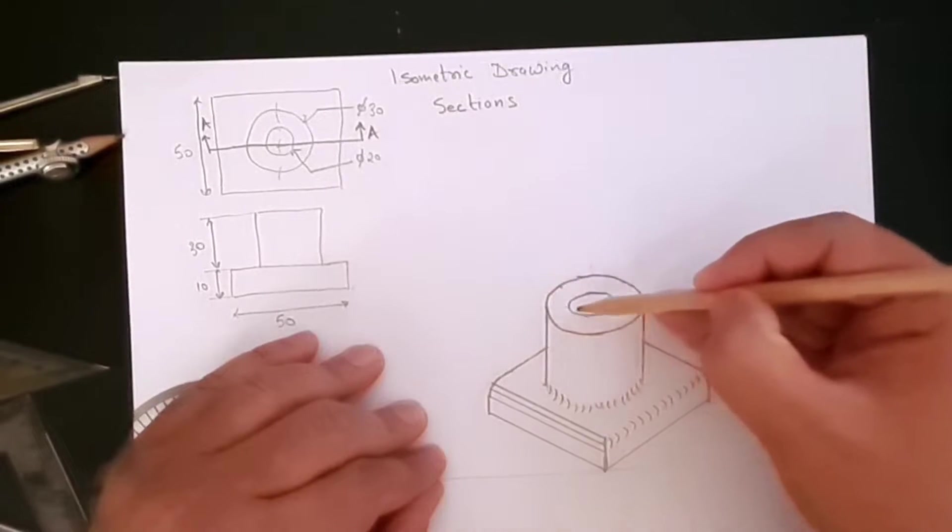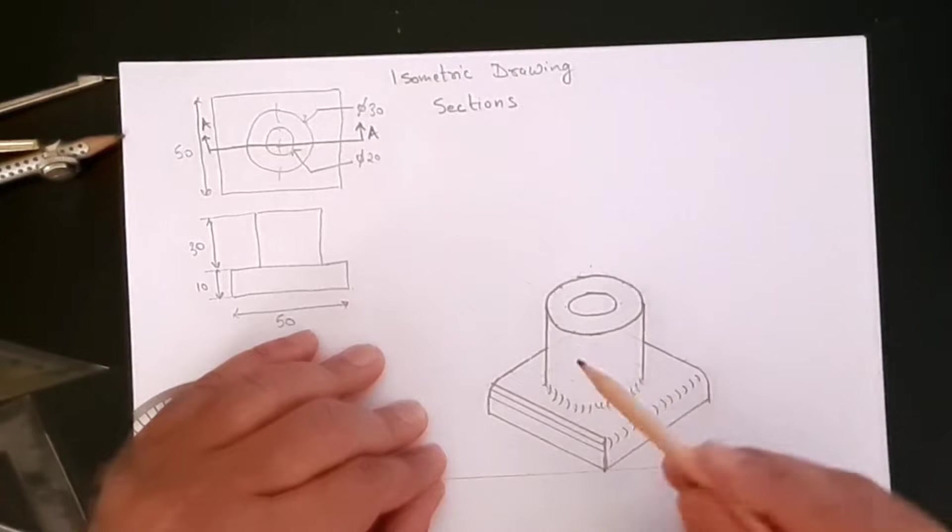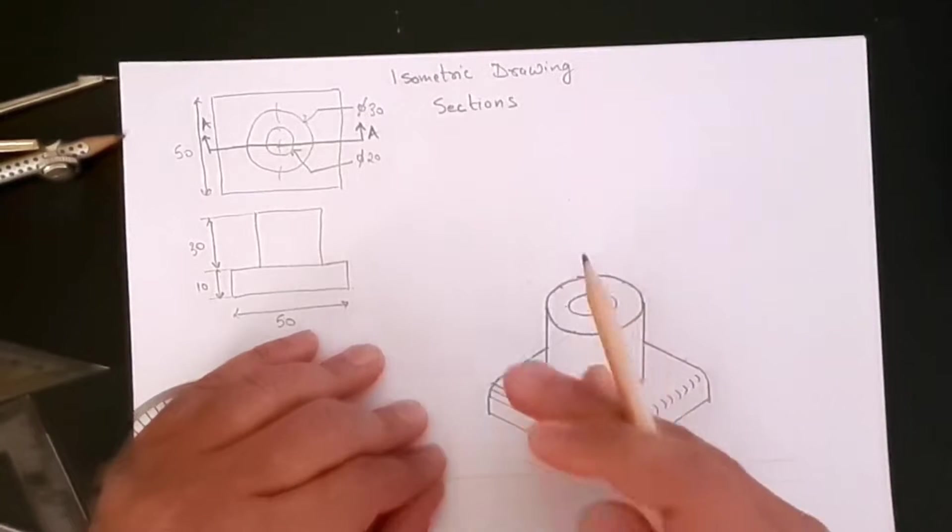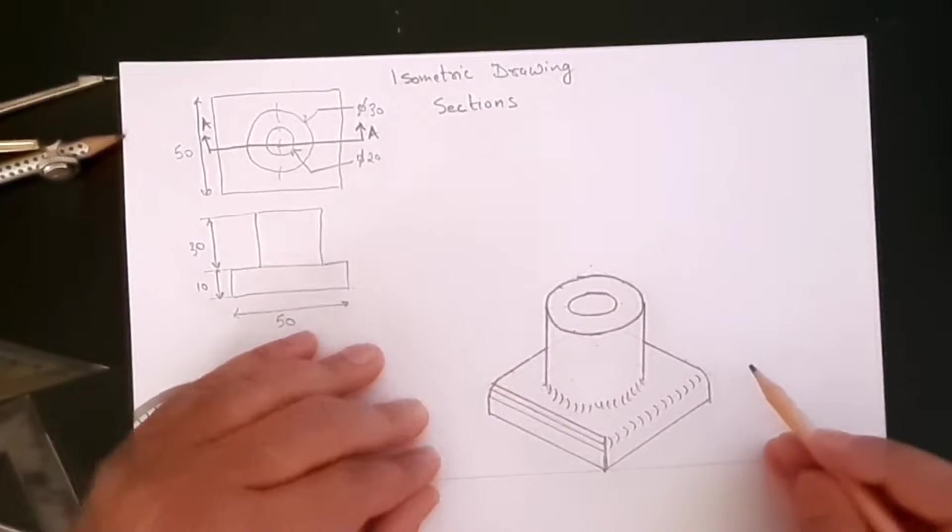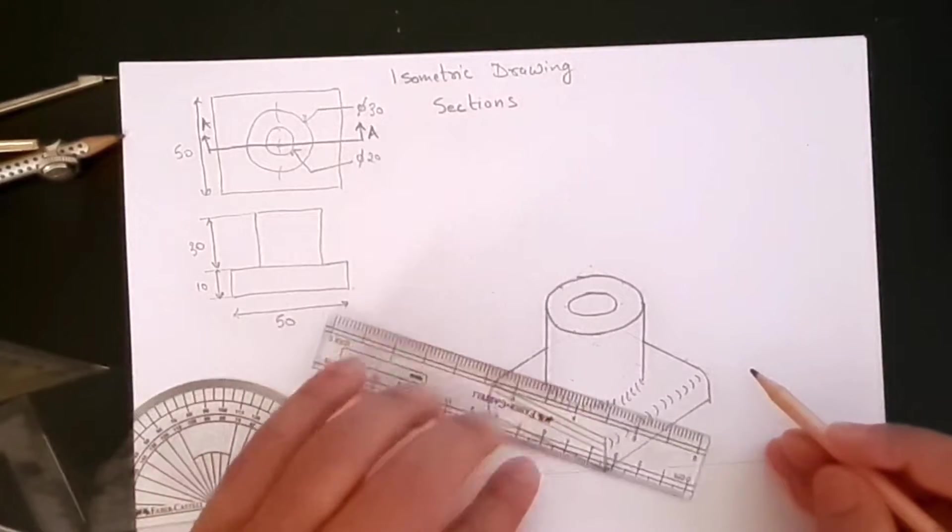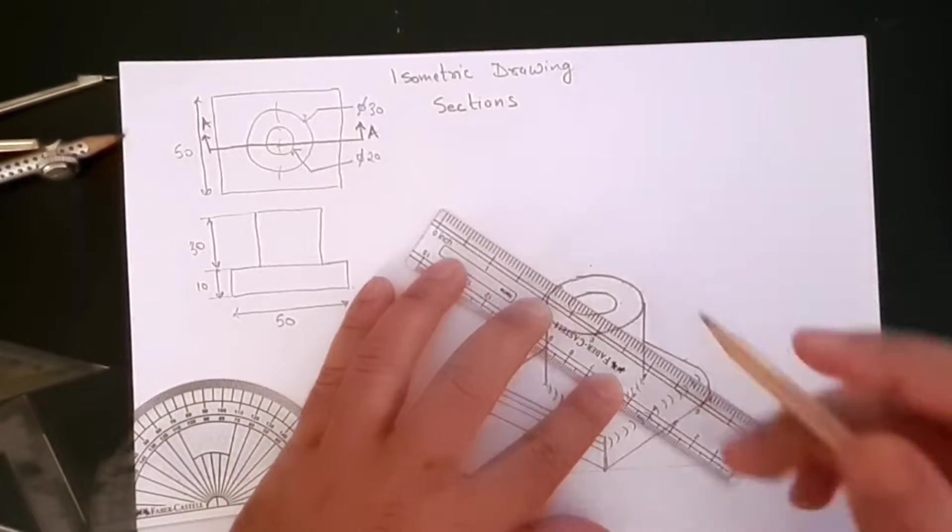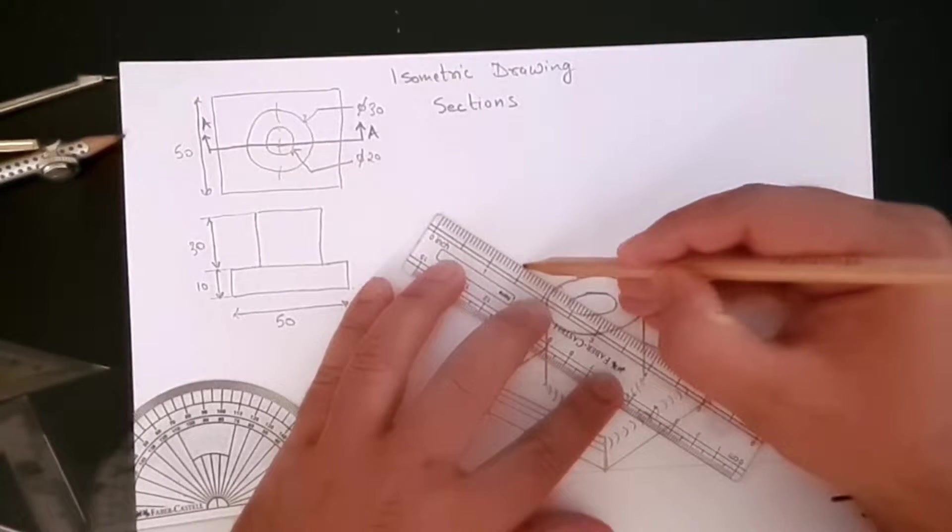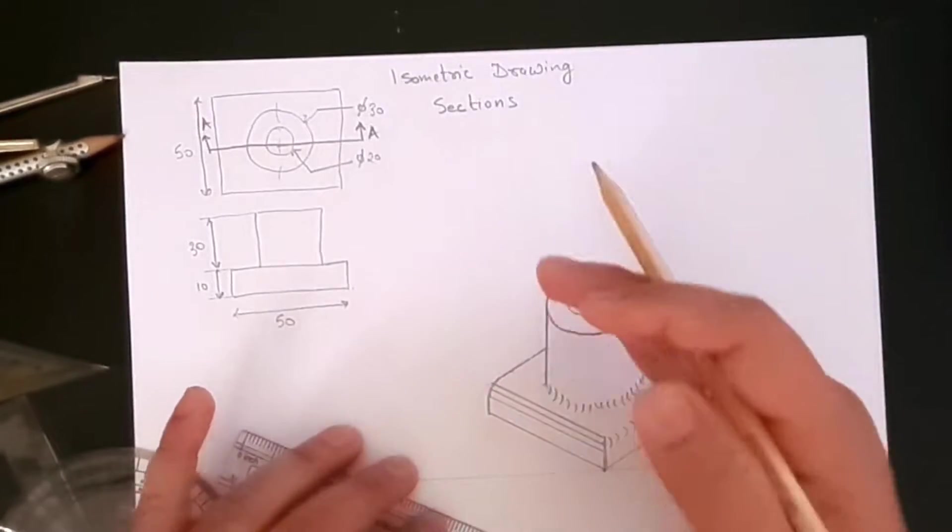So in here what we are going to do is we are going to cut a section out here like this and then we are going to remove this portion out from here.